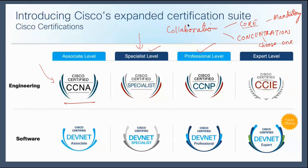If you want to go for CCIE, after completing your professional level, you can go ahead and do the expert level. CCIE includes a lab exam of eight hours and one written exam, which is the core from the same track. But if you have the CL core, you can directly go for the expert level and take the lab exam, and if you pass that, you will get the CCIE certification.